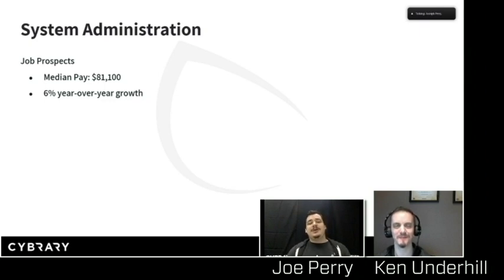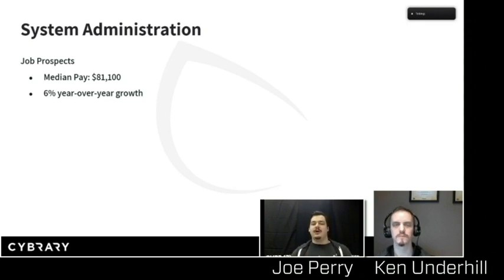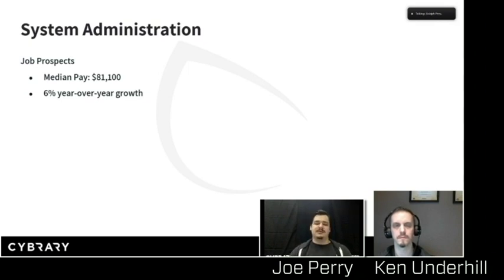So we talked about what your typical day looks like — what are your job prospects looking like? Systems administration, of the career paths we talk about, is the slowest growing because it's sort of the traditional IT role — one that has been filled pretty effectively and that people know very well. So we're only looking at about 6% year-over-year growth, which isn't bad. It's actually keeping pace with the standard jobs market. It's just not the terrifying, phenomenal growth that you're going to see in some of these other career paths.